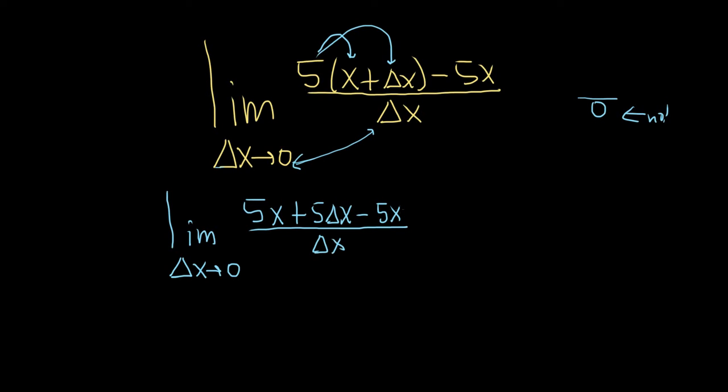And it's all being divided by delta x. Oh, look at this, the 5x's cancel. So this is equal to the limit as delta x approaches 0 of 5 times delta x over delta x. And they cancel.